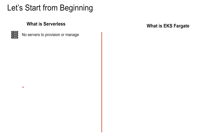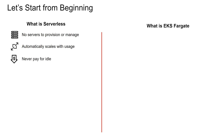For a service to be serverless, it has to have these four properties. Number one, no servers to provision or manage, either physical or virtual. Number two, it will automatically scale with usage — you do not have to configure any additional auto scaling group. Number three, you will never pay for idle; you will only pay for what you use. And number four, it is inherently highly available.